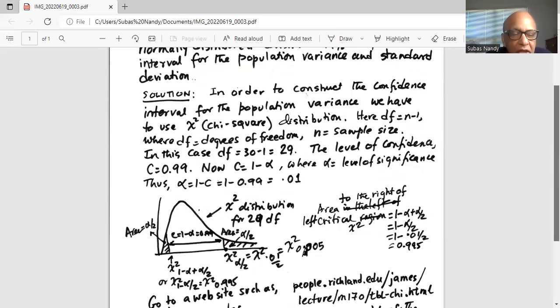Chi-square is indicated by the area to the right of the critical value. On the left tail, the area to the right of that critical value is 1 minus alpha plus alpha by 2, which works out to 1 minus alpha by 2.